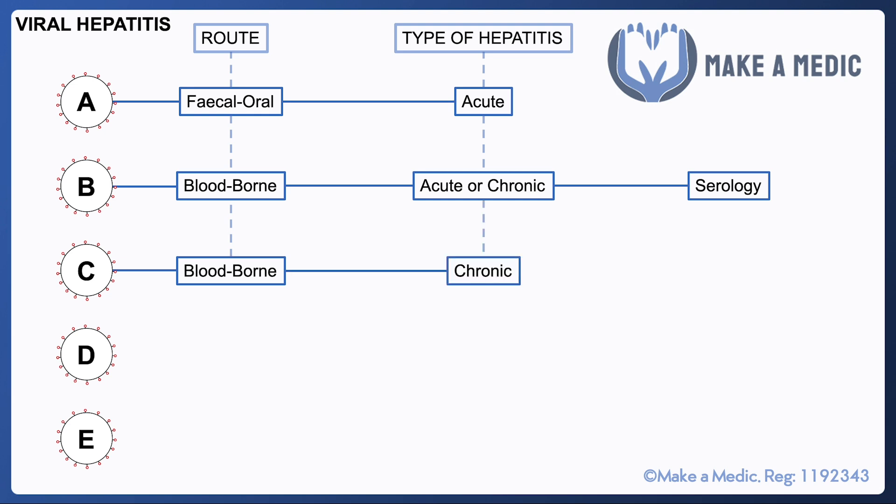Hepatitis C is again bloodborne and it tends to cause chronic infection. The way that we test for hepatitis C is by detecting its RNA.